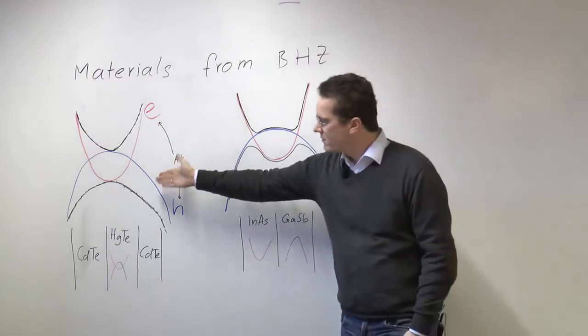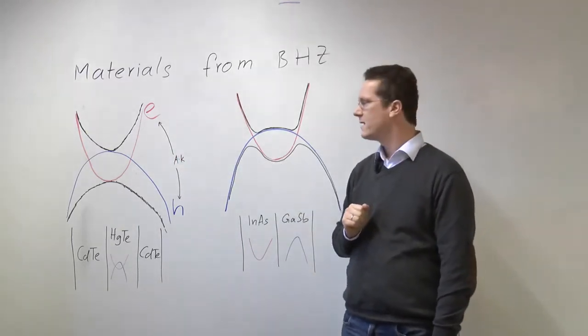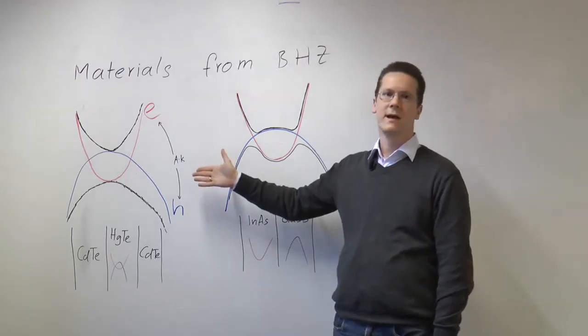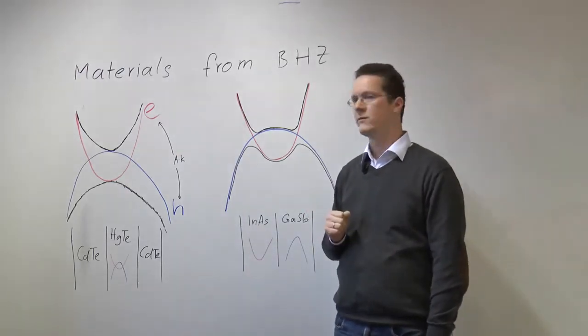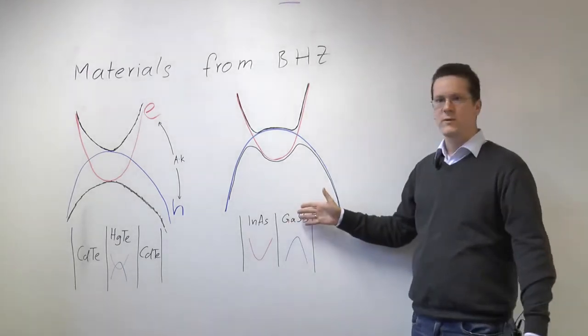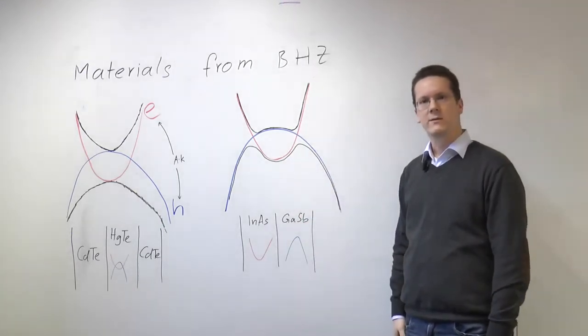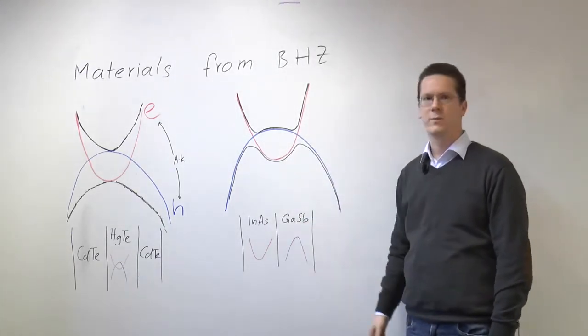Now this is the original material that Bernevik, Yu and Zhang were predicting to be topological insulators and that subsequently was observed experimentally in Würzburg. This material is newer. It was also predicted by the group of Professor Zhang and there's not many labs in the world that are trying to make this material as a topological insulator.